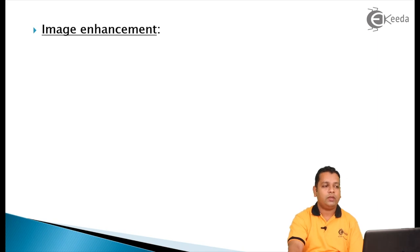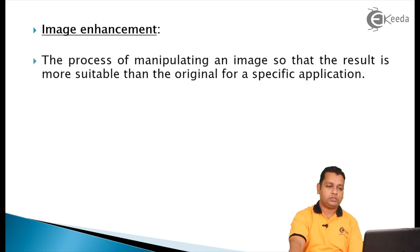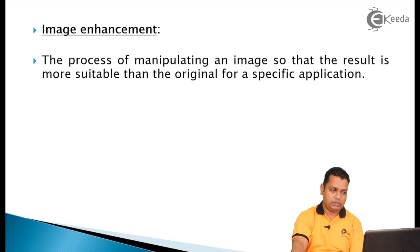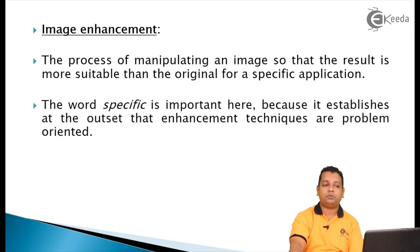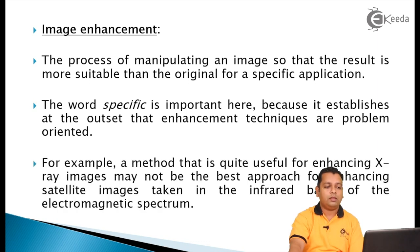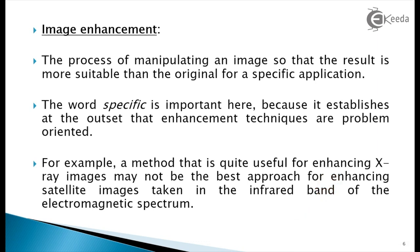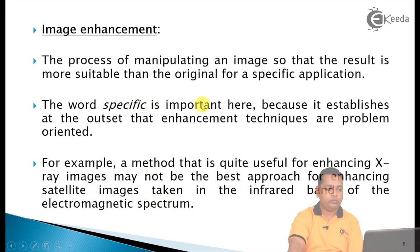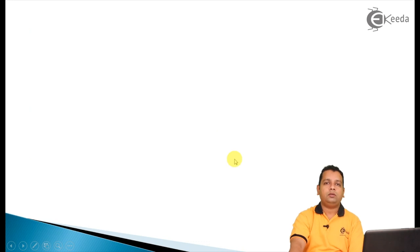The second step is image filtering and enhancement — the process of manipulating an image so that the result is more suitable than the original for a specific application. The word 'specific' is important because it establishes that enhancement techniques are problem-oriented. For example, a method useful for enhancing X-ray images may not be the best approach for enhancing satellite images taken in the infrared band of the electromagnetic spectrum.